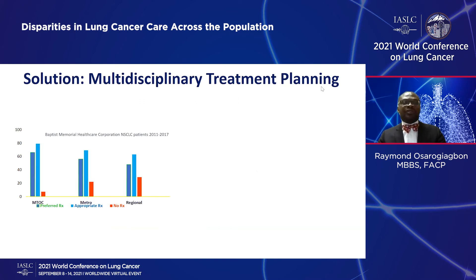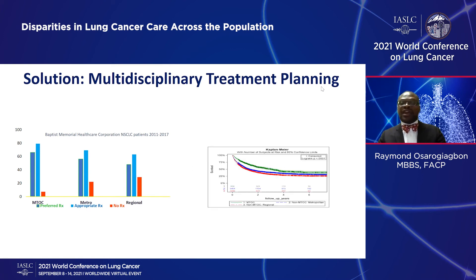The solution to surgical access disparity is multidisciplinary decision making. Getting the right patient to the right treatment is easier within a multidisciplinary forum than outside of it, and not surprisingly, that leads to improved survival. Multidisciplinary care, shown in the green plot, outperforms non-multidisciplinary care shown in blue and red.